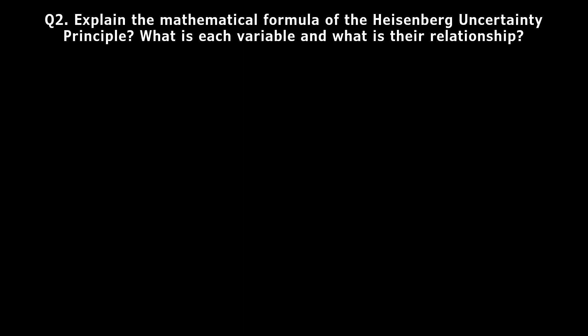Mathematically, the Heisenberg Uncertainty Principle is expressed by this equation: Δx times Δp is greater than or equal to h over 4π, where Δx is the uncertainty in position and Δp is the uncertainty in momentum.